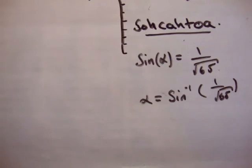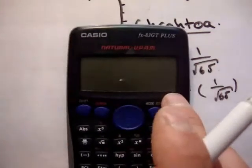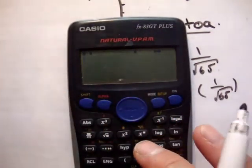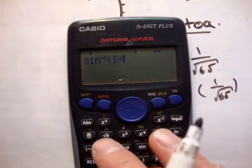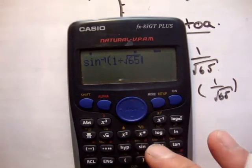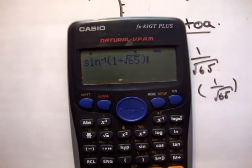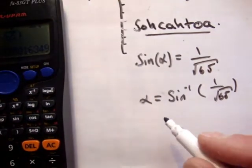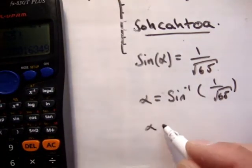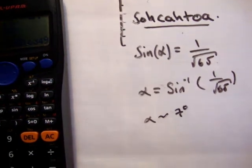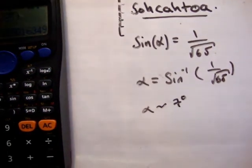Using the calculator — shift sine for inverse sine, 1 divided by root 65 — and we get an answer of 7.12 degrees. So alpha is approximately 7 degrees.